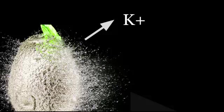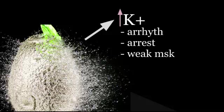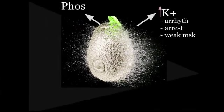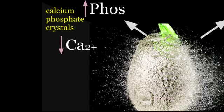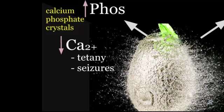Let's talk about these cellular breakdown products and the electrolyte derangements that you can see. Starting with potassium — it's going to be high. As we saw with this patient who already had EKG changes, high potassium can cause arrhythmias, even cardiac arrest, and weak musculoskeletal changes. Phosphate is going to be high, and calcium is going to be low. The reason calcium is low is because the high amount of phosphate binds calcium to form calcium phosphate crystals, which precipitate out. The calcium being so low can cause tetany or even seizures.